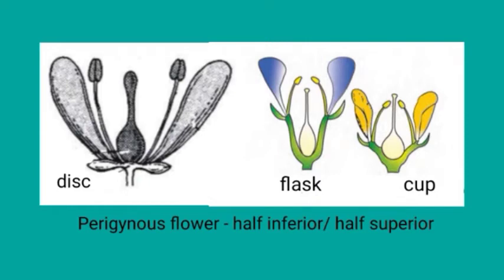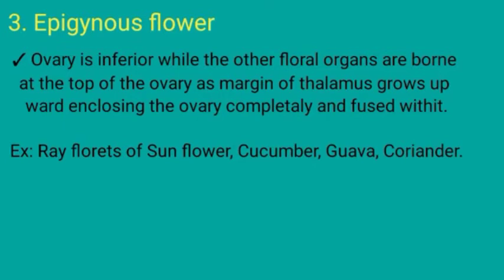The next type of flower is epigynous flower. In this type, the ovary is inferior, while other floral organs like Calyx, Corolla, and Androecium are born at the top of the ovary as the margin of the thalamus grows upward, completely enclosing and fusing with the ovary. Examples: ray florets of sunflower, cucumber, gourd, and coriander.